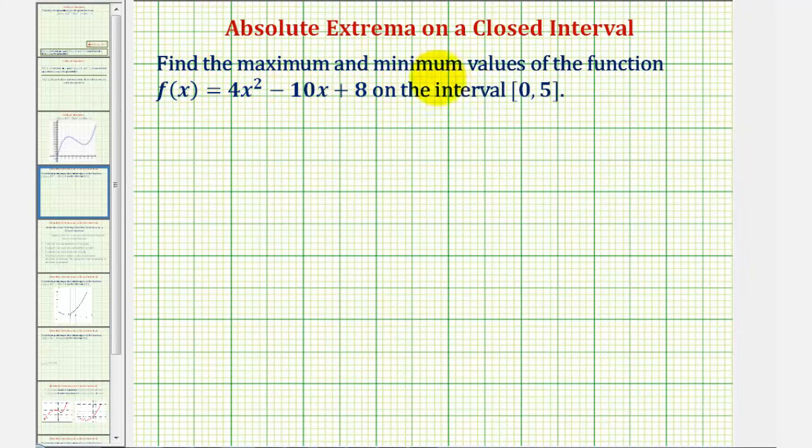We want to find the maximum and minimum values of the function f of x equals 4x squared minus 10x plus 8 on the closed interval from 0 to 5. The directions may also say find the absolute extrema on the closed interval.